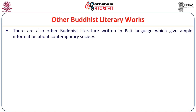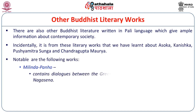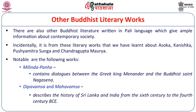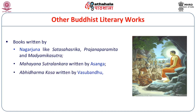There are also other Buddhist literary works written in Pali language which give ample information about contemporary society. It is from these literary works that we have learnt about Ashoka, Kanishka, Harsha, Mitrasena and Chandragupta Maurya. Notable works include Milindapanha containing dialogues between the Greek King Menander and the Buddhist saint Nagasena; Dipavamsha and Mahavamsha describing the history of Sri Lanka and India from the 6th to the 4th century BC; books written by Nagarjuna, including Satasahasrika Prajnaparamita and Madhyamika Sutra; the Mahayana Sutra written by Asanga; and the Abhidharmakosha written by Vasubandhu, all providing valuable descriptions of society.